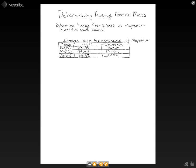Determining average atomic mass. We're going to determine the average atomic mass of magnesium given the data shown below. That data is just some isotopes and their abundances for magnesium.